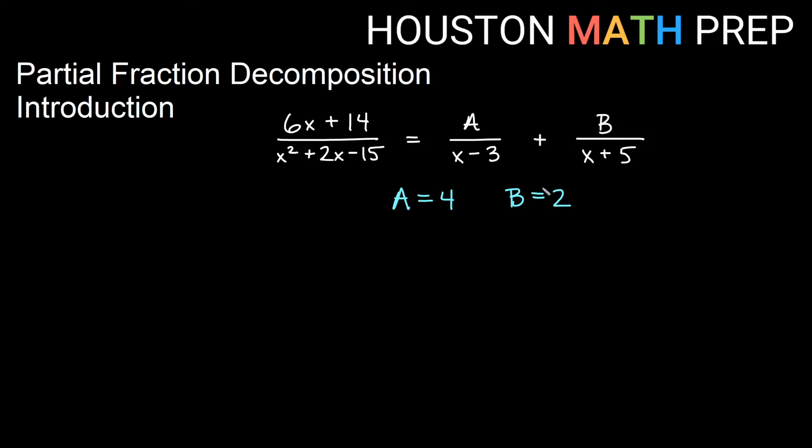If you look at our original decomposition, we said it was going to be something over (x - 3) and that something was A and something over (x + 5) and that something was B. Now we can plug those in and this is our partial fraction decomposition. You'll notice this is what we started with at the beginning of the video when we worked this problem the other direction.